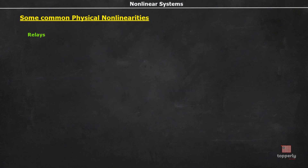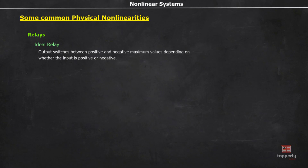Another example of a nonlinear element is relays. Relays are electromagnetic switches operated by a relatively small electric current that can turn on or turn off a much larger electric current. The relays can be classified into four based on the nature and approximation used in the process. The first one is ideal relay. Here, the output switches between the positive and negative maximum values depending on whether the input is positive or negative. For positive values of input, the output is positive, that is plus M, and for negative values of input, the output is minus M.